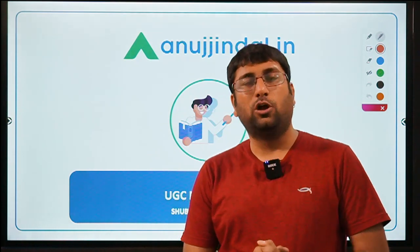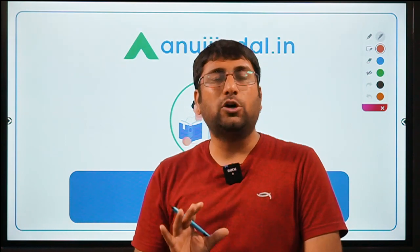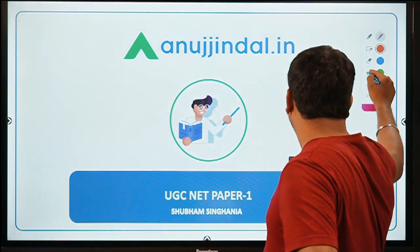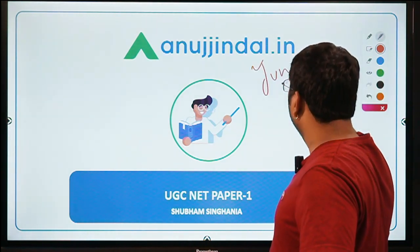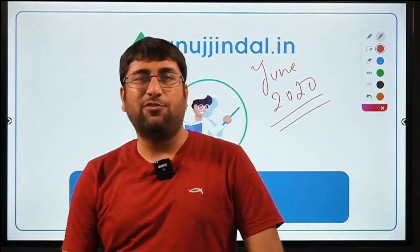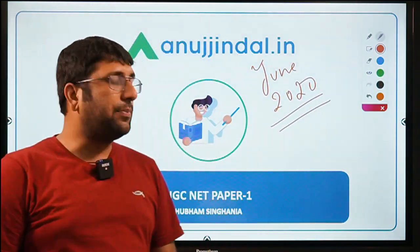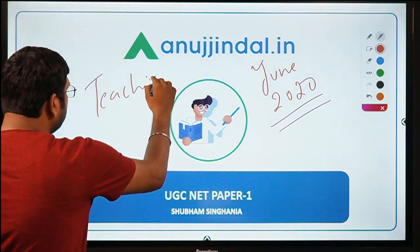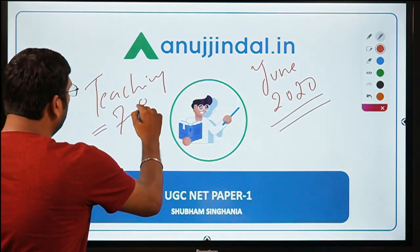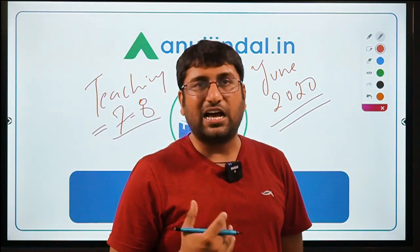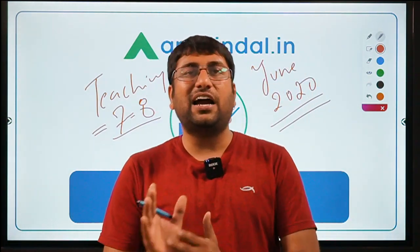I would like to tell all our students and viewers that according to the syllabus, there should be only 5 questions in each topic. But in the June 2020 exam, across all shifts — whether Commerce or Management paper — where you have questions from Teaching Aptitude, there were not 5 questions, not 6 questions, but approximately 6-8 questions.